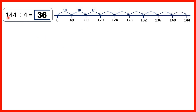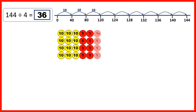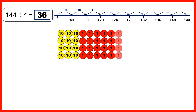Then 144 divided by 4. We made 3 jumps of 10 times 4, so we show 3 tens in each row. We have 4 rows because we are dividing by 4. Then we made 6 jumps, so we show 6 ones in each row — giving 36 in each row. If we regrouped these counters there would be 144 altogether.